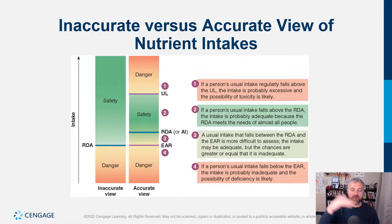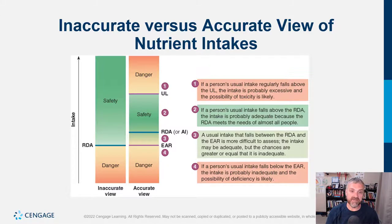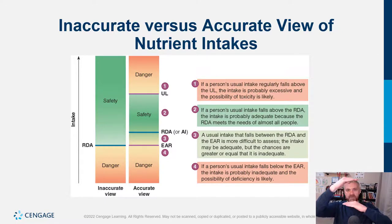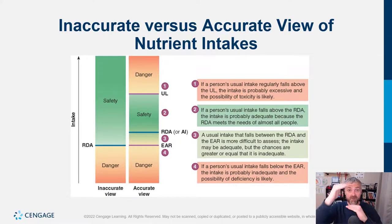So the EAR is just used to set the RDA. The RDA is our floor. What's the ceiling? The UL, or Tolerable Upper Intake Level — if you consume more than that, you're risking toxicity. If you consume less than the RDA, you're risking deficiency: for example, not consuming the RDA of vitamin C will give you scurvy. If you're consuming way too much calcium above the UL, you can start to see calcification of your soft tissues. So the RDA is the floor, the UL is the ceiling — we want to eat somewhere in the middle. We don't know exactly where that optimal point is, but we know it's between the RDA and the UL.